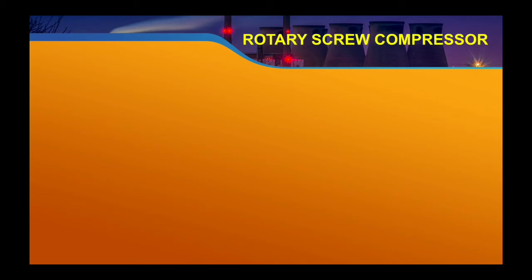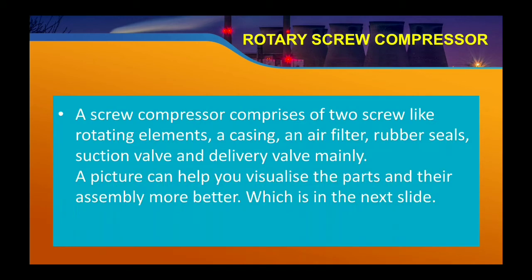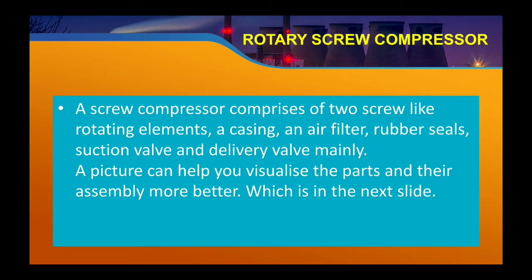The first type is the rotary screw compressor. A screw compressor comprises two screws as rotating elements, a casing, an air filter, rubber seals, a suction valve, and a delivery valve. In a rotary screw compressor there are mainly two screws driven by a shaft, which is driven by the gear train. There is an outer cover known as the casing, and an air filter is provided. The suction valve sucks air from the atmosphere and the air filter removes moisture.